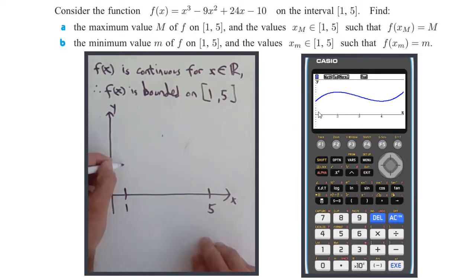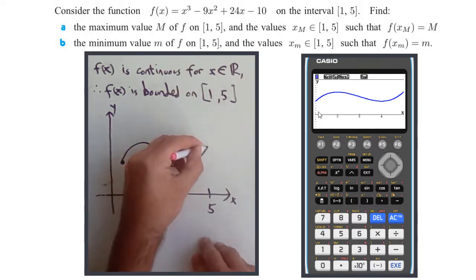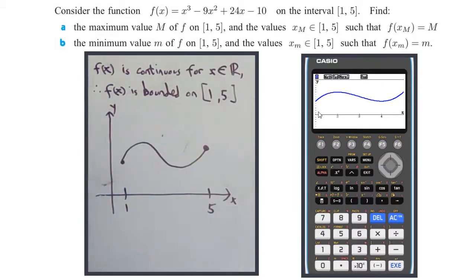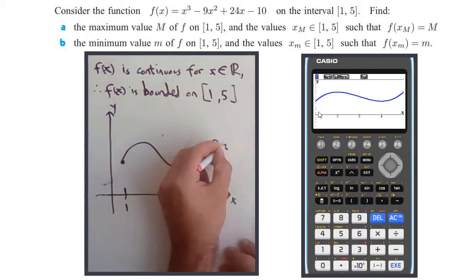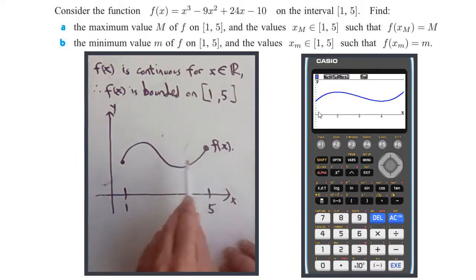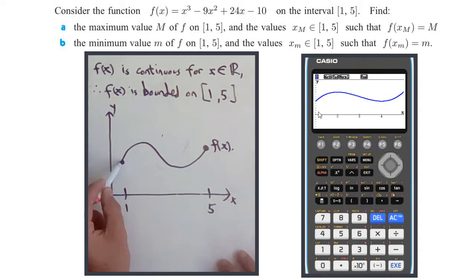It starts down here, wobbles up to a maximum, down to a minimum, and up again. That's f(x). Remember, it's a closed interval, so we include f(5) and f(1). We need the maximum and minimum values. The minimum is either this y value or here.